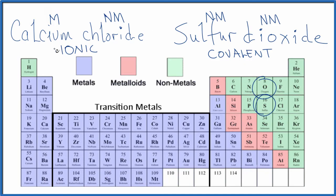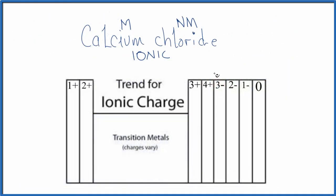So let's write the formula first for calcium chloride, which is our ionic compound. Since we're dealing with ions, we have to deal with charge. And this is a general trend for ionic charge. Group one is one plus, two is two plus.